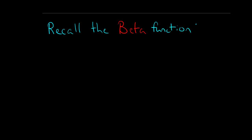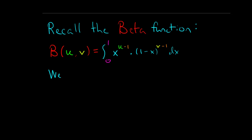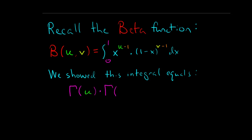So let's get started on this derivation. In order to get started, I'm going to ask you to recall the work that we did in our previous video on the beta function. The beta function takes two inputs, we'll call them u and v. Beta of u comma v equals the integral from 0 to 1 of x to the u minus 1 times 1 minus x to the v minus 1 dx. We showed that this has an important relationship to the gamma function, because this integral equals gamma of u times gamma of v all over gamma of u plus v.